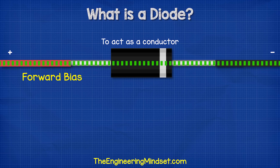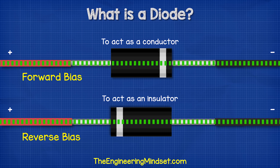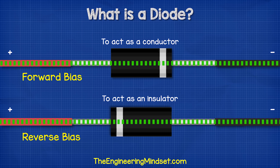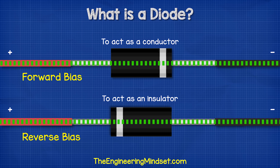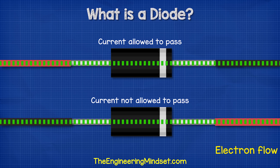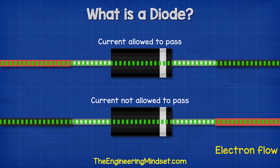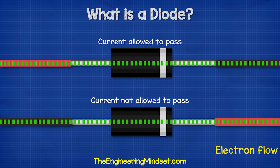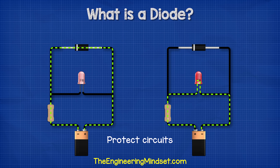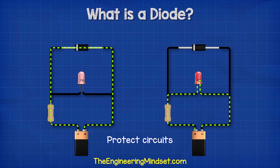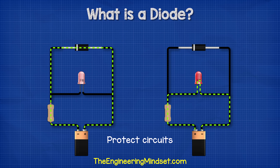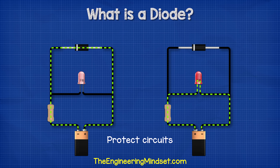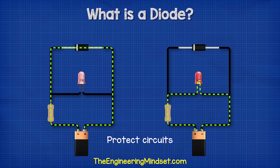If we flip the diode, it will act as an insulator and the current can't flow — we call this the reverse bias. As mentioned, we use diodes to control the direction of current flow in a circuit. That's useful, for example, to protect our circuit if the power supply was connected back to front. The diode can block the current and keep our components safe.